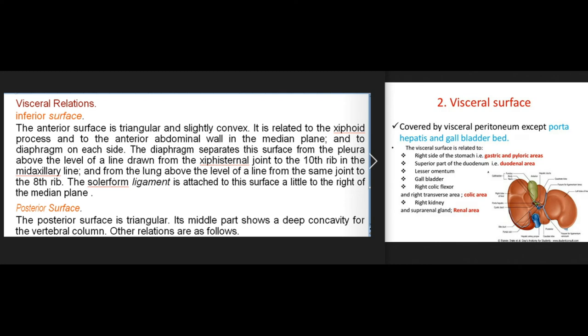Visceral relations — inferior surface: the anterior surface is triangular and slightly convex, related to the xiphoid process, the anterior abdominal wall in the median plane, and the diaphragm on each side. The diaphragm separates it from the pleura above a line from the xiphoid joint to the 10th rib in the midaxillary line, and from the lung above the line from the same joint to the 8th rib. The falciform ligament is attached to the surface slightly to the right of the median plane.